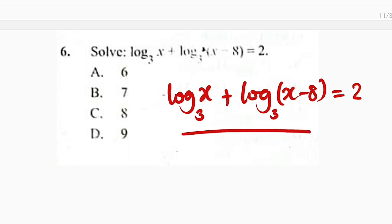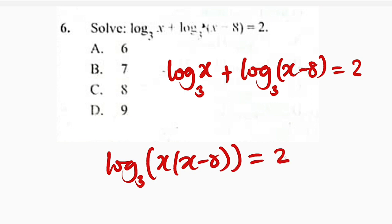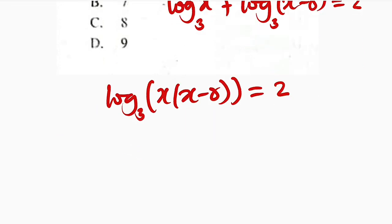But let us just solve it. Since we have common logs, we take a log to base 3. Then we multiply the argument, since we have addition. We have x multiplied by x minus 8. All of this is equal to 2. And from definition, if you take this 3, you raise it onto 2, you must get the argument.